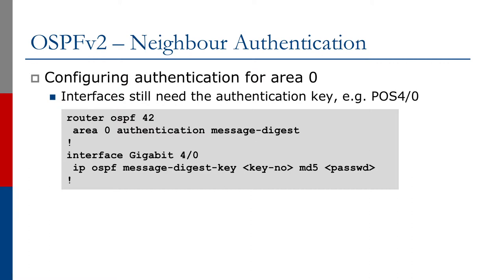Let's look at an OSPFv2 neighbor authentication configuration example. Here we're configuring authentication for area 0. Interfaces still need the authentication key. We go to the OSPF configuration and state that area 0 is going to use authentication, simply by using 'area 0 authentication message-digest', and then we go to the interface and do 'ip ospf message-digest-key' with whatever that key password is going to be for that interface. All other devices on that shared link need to have the same key for them to talk OSPF to each other.